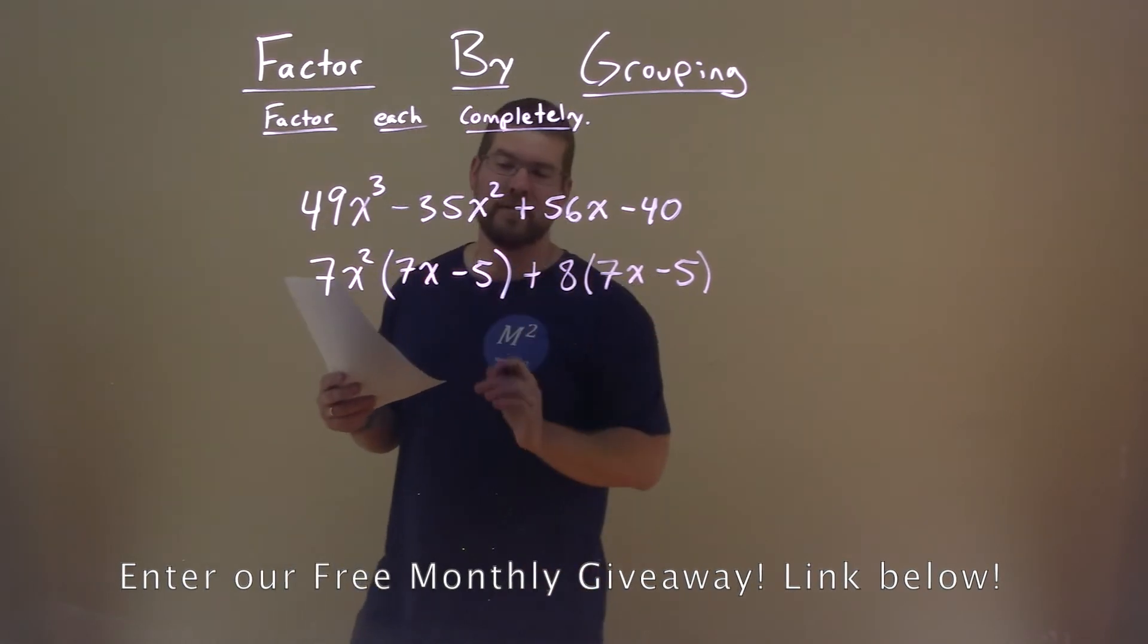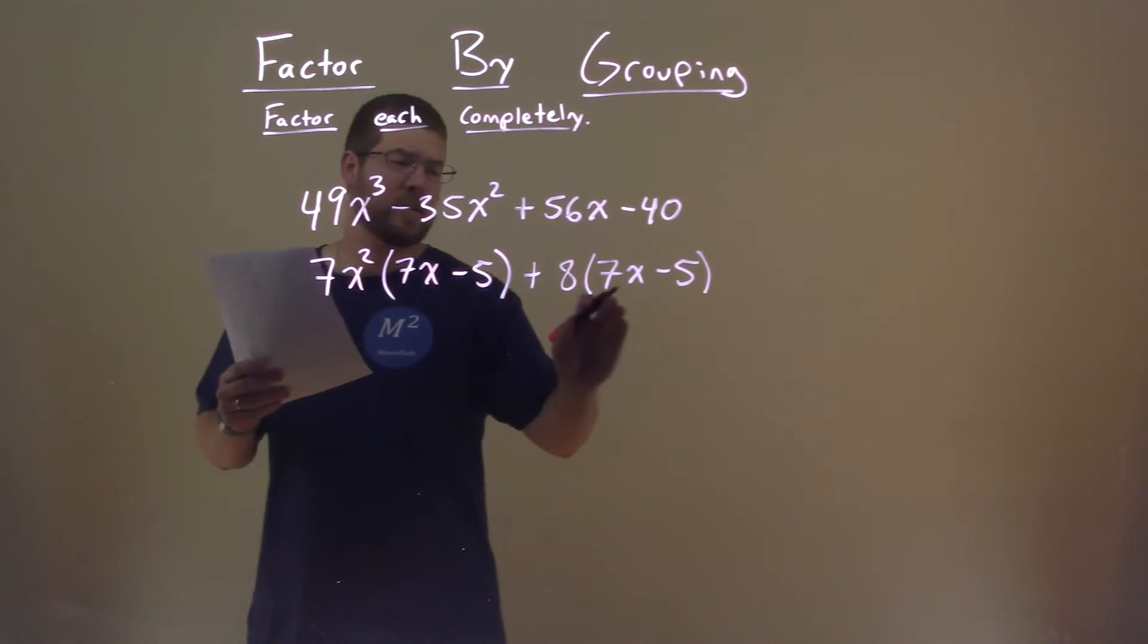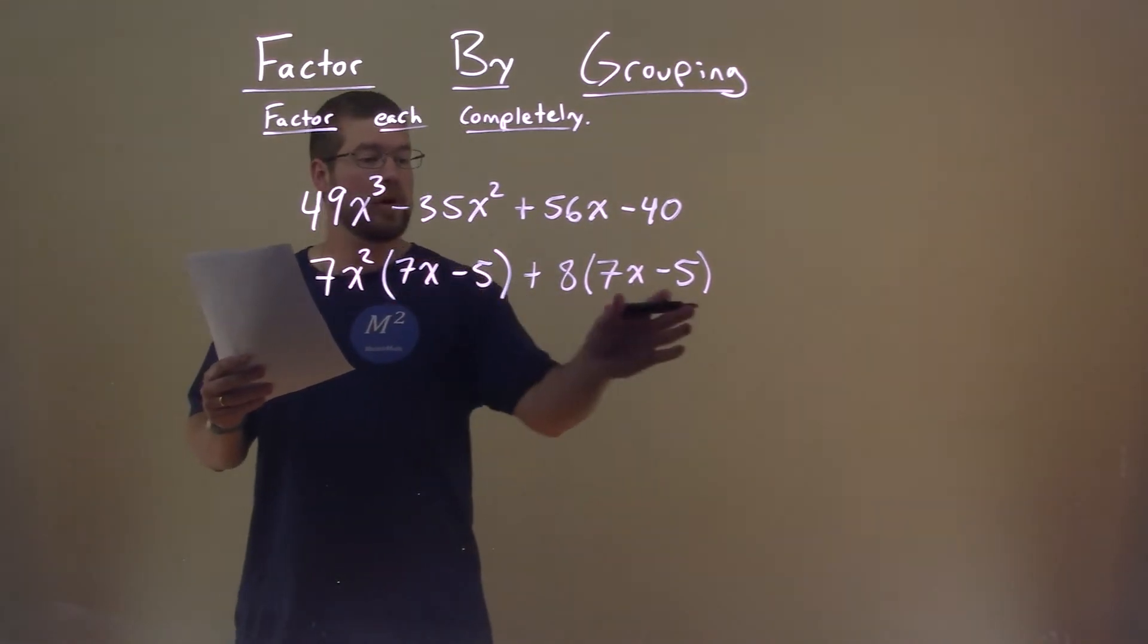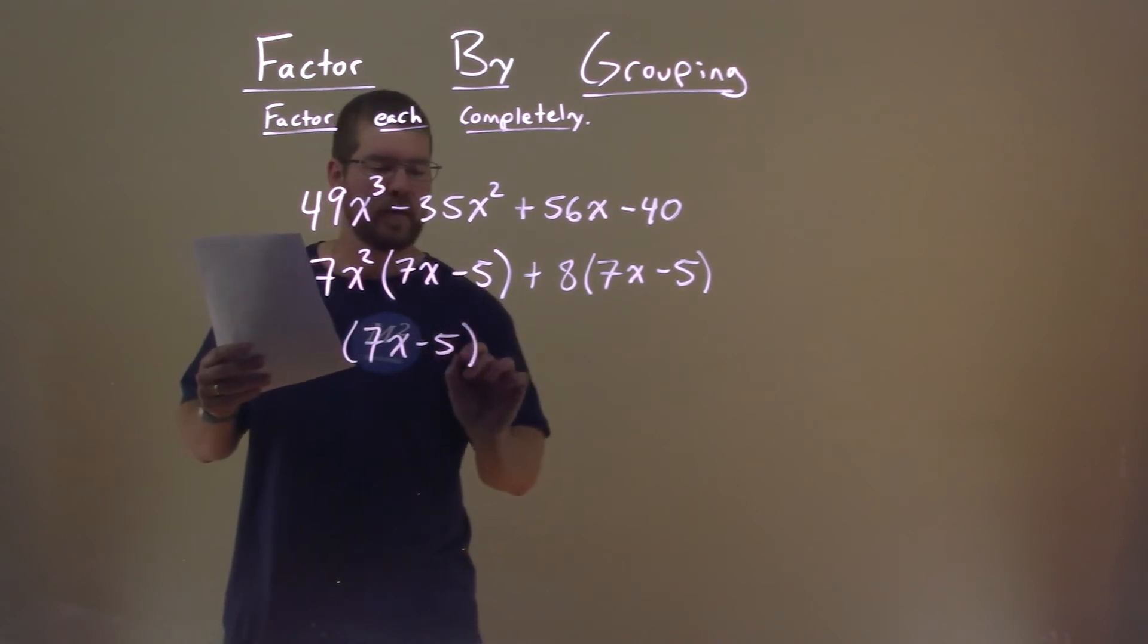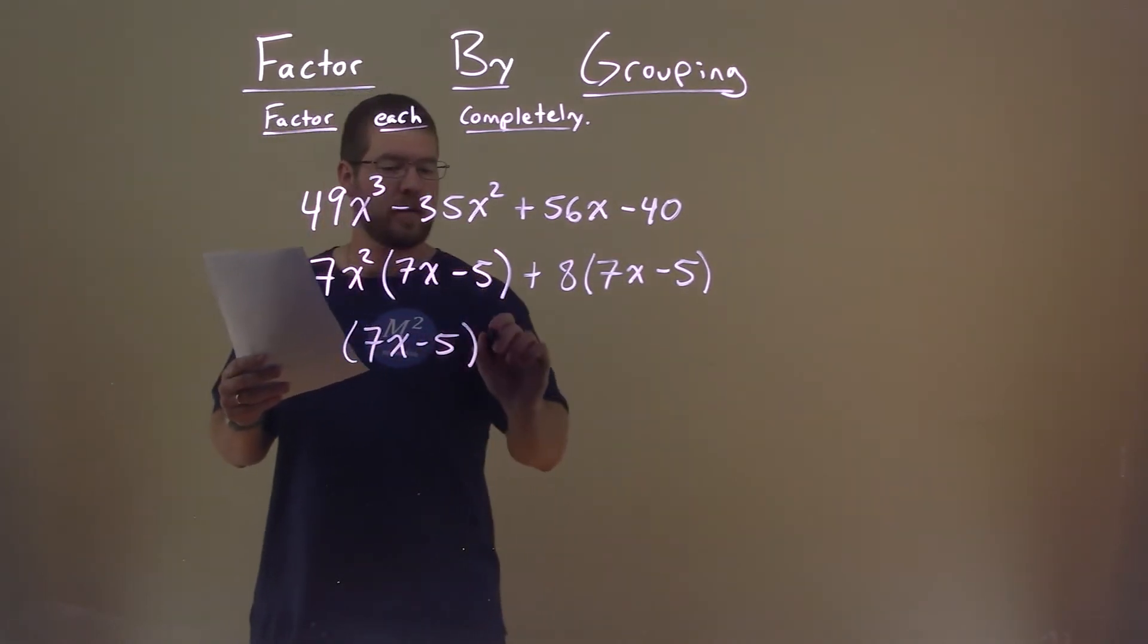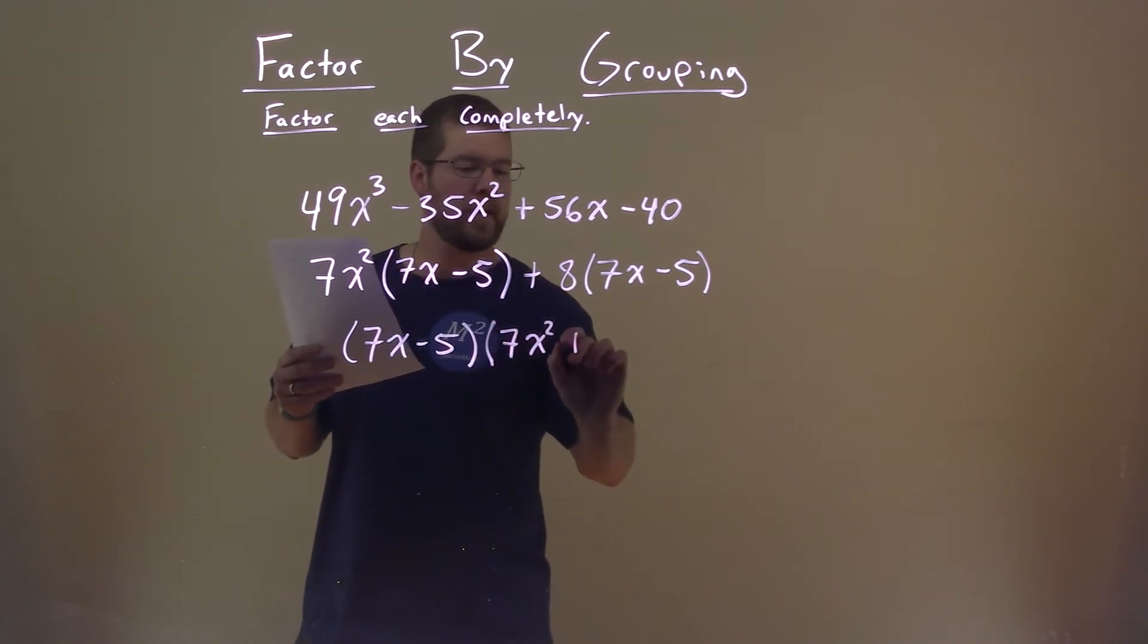Notice, these are written twice, 7x minus 5. So, if we pull out a 7x minus 5 now from both parts, we're left with a 7x minus 5 here times what's left over, 7x squared plus 8.